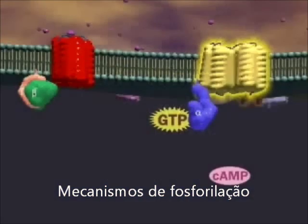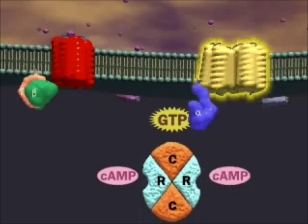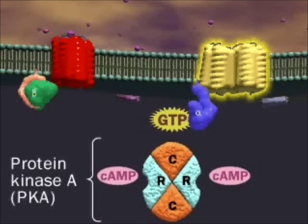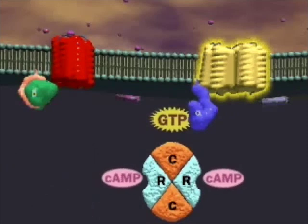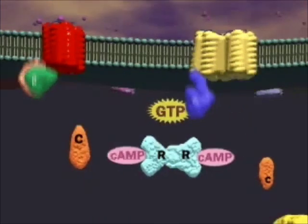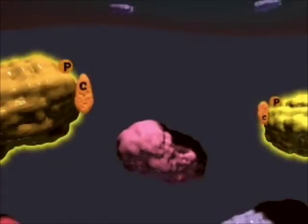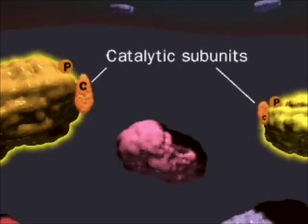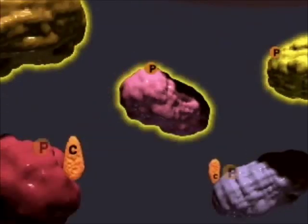cAMP, produced by adenylate cyclase G-protein interactions, binds regulatory subunits of PKA — protein kinase A — a tetramer. cAMP binding causes the catalytic subunits of PKA to dissociate and activate target proteins by phosphorylating them. These catalytic subunits may perform this task many times, amplifying the original stimulus signal.